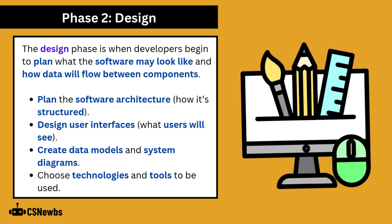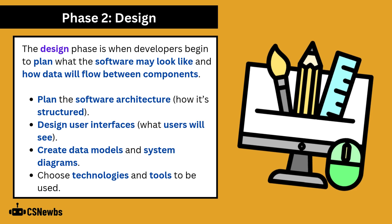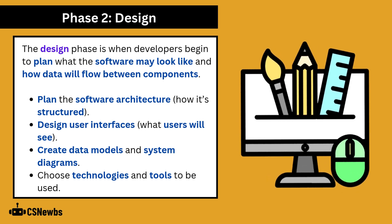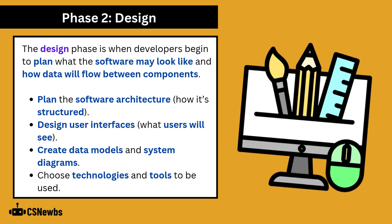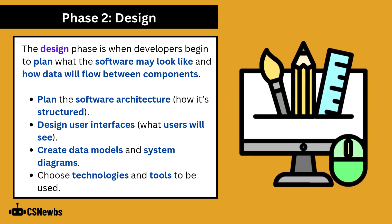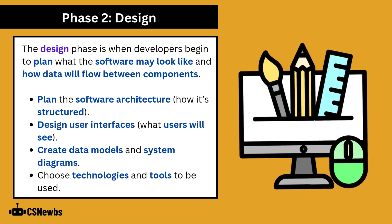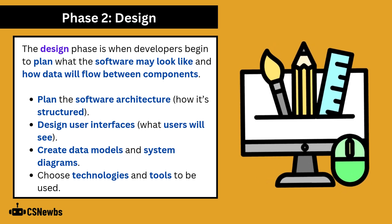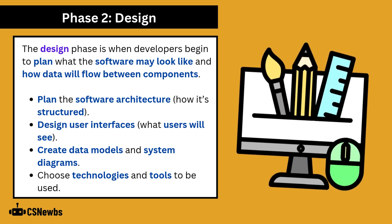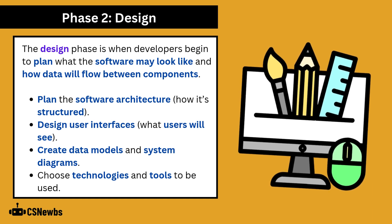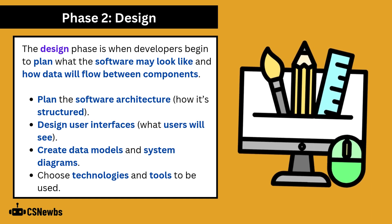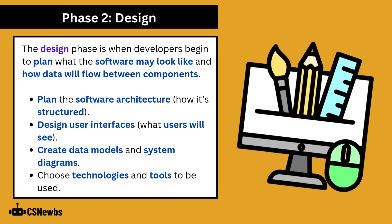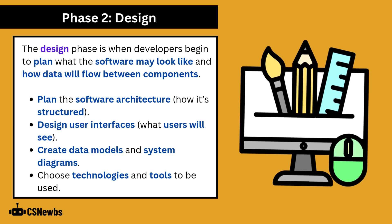The design phase is when developers begin to plan what the software may look like and how data will flow between components. They will need to plan the software architecture and how the project will be structured, design user interfaces showing what users will actually see, create data models and system diagrams, and choose the appropriate technologies and tools.